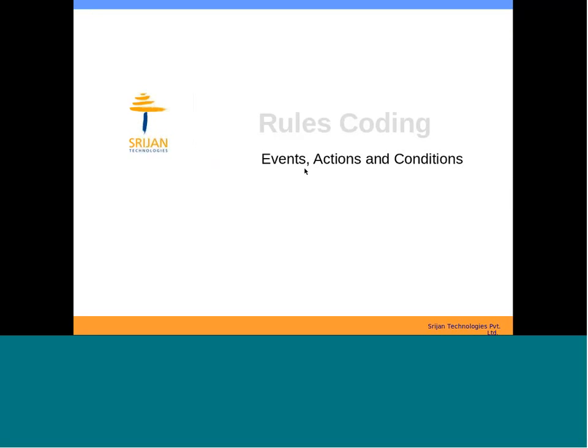This webinar is on the Rules module. The Rules module is used extensively when we require things like: there's an event, and corresponding to that event there's an action, with some conditions determining whether that action takes place or not. For example, a simple event called 'user login' might trigger sending a notification like 'Hello user, you have logged in to your site.' A corresponding condition would be: don't send the notification if the user is the site administrator.